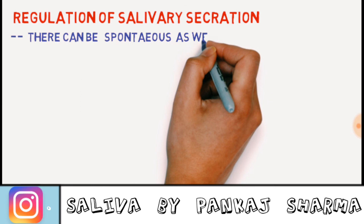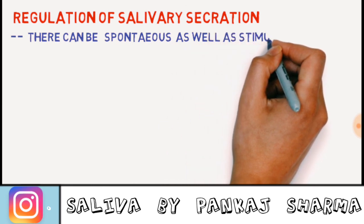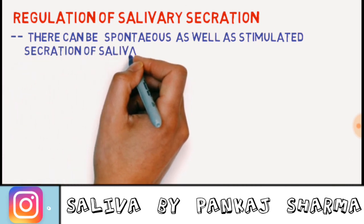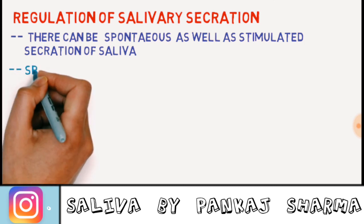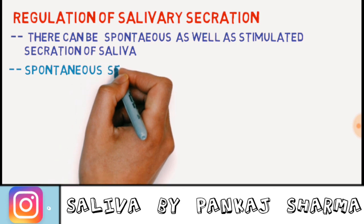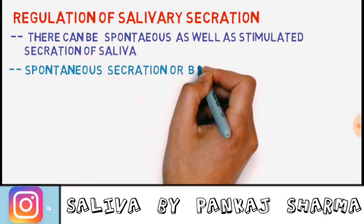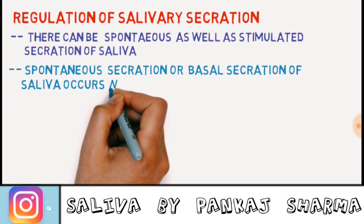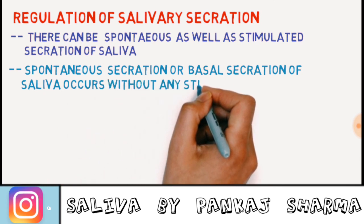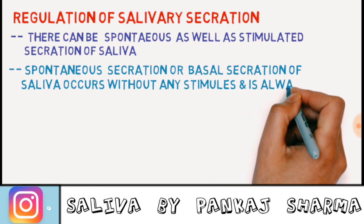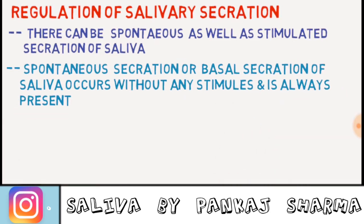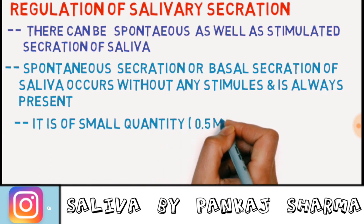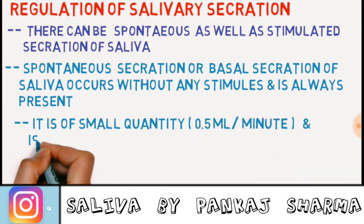There can be spontaneous as well as stimulated secretion of saliva. Basal secretion of saliva occurs without any stimulus and is always present. It is of small quantity, that is 0.5 ml per minute.